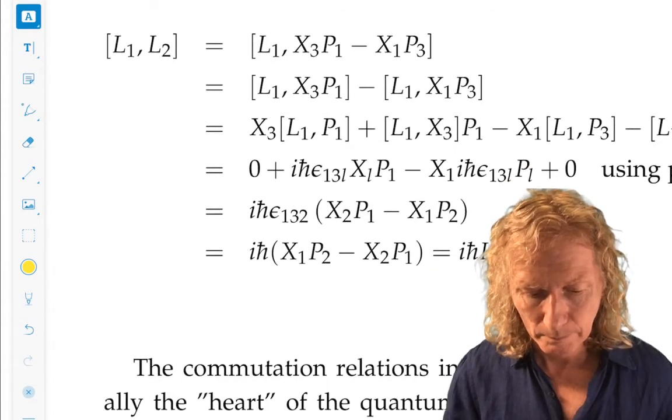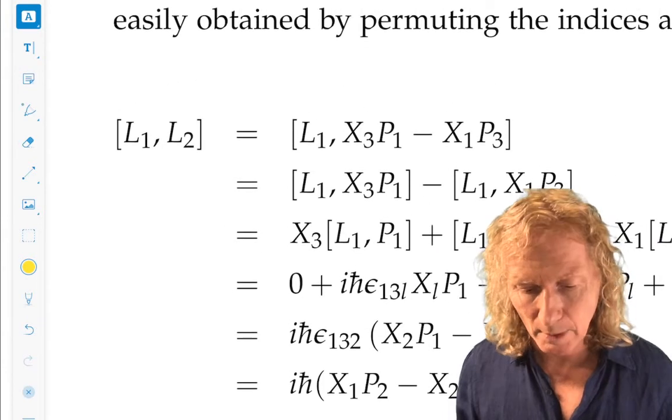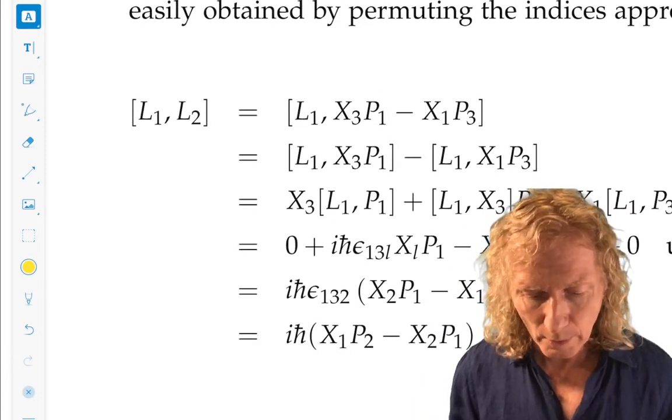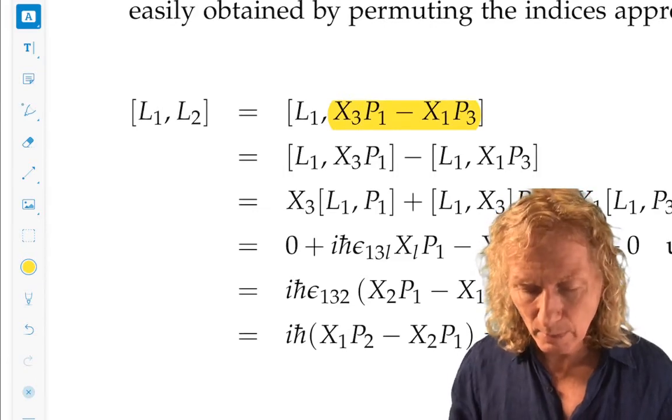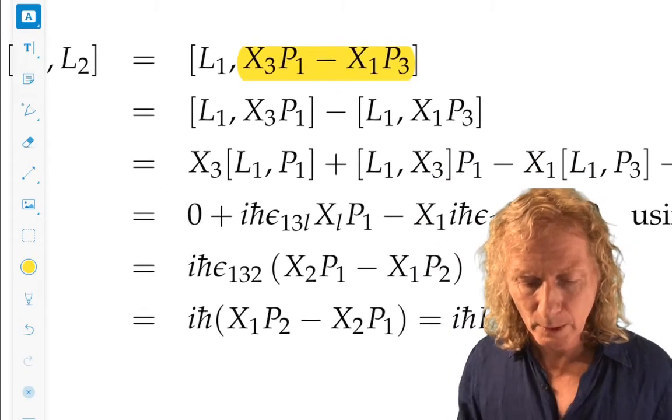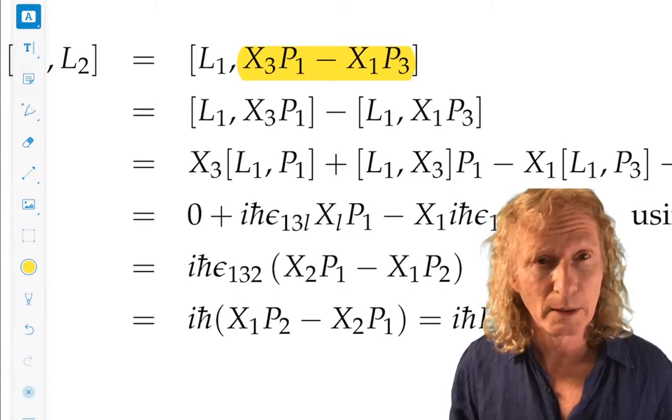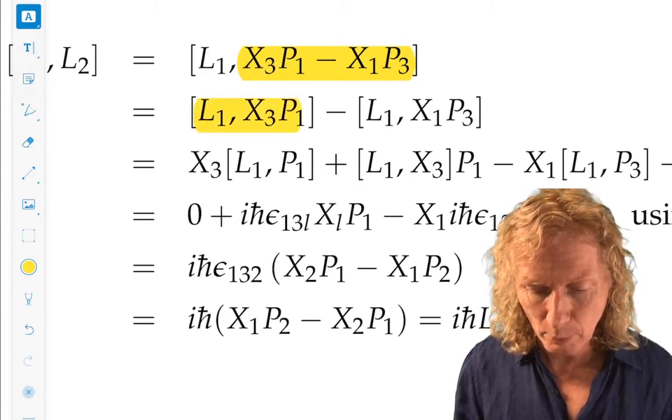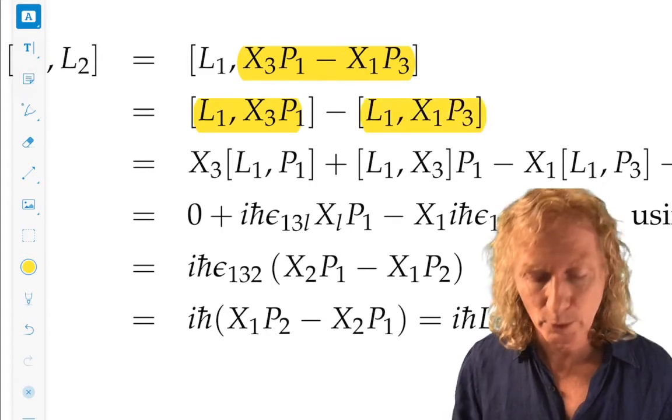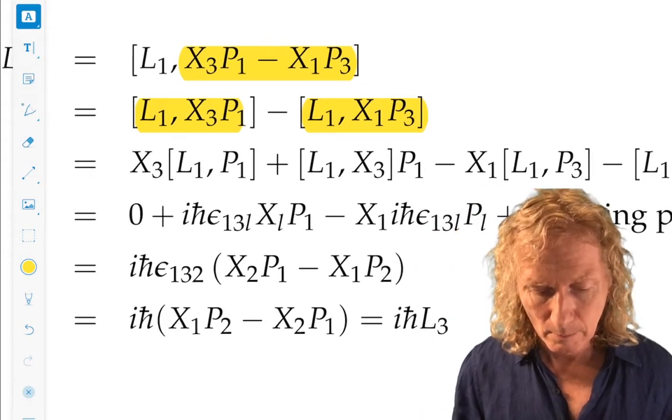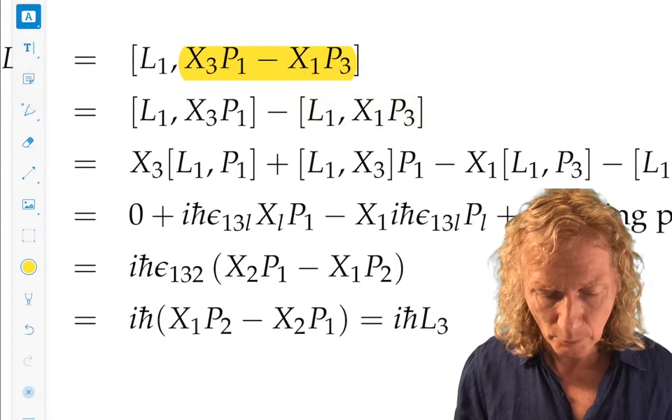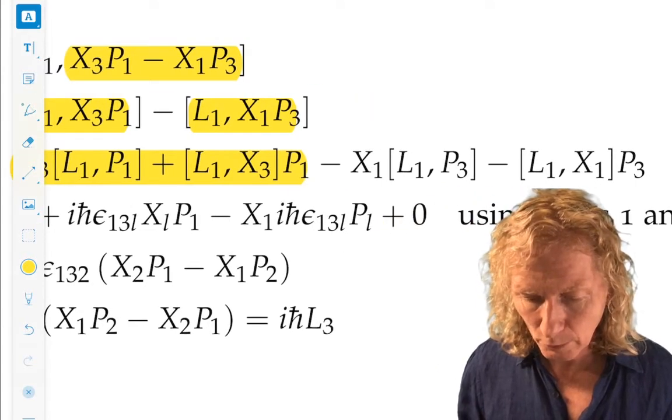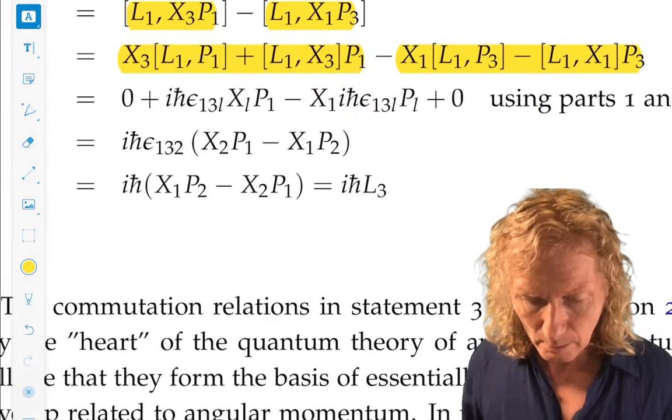In the proof. Commutator of, let's do L1 with L2. The other components will be similar. So L1 with, what is L2? It's this. We can leave L1 by itself because we already worked the commutator with L with X and P in the previous two parts of this. So what do we do? We use that for the product of operators in the commutator. We can use the relation we derived earlier. And the first one. This will break up into two terms. And this will break up into two terms. So we get four terms.